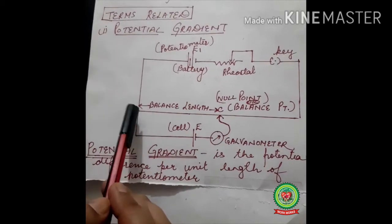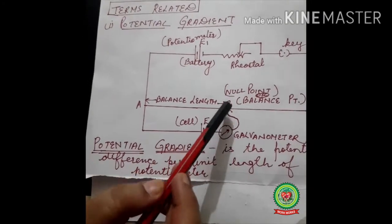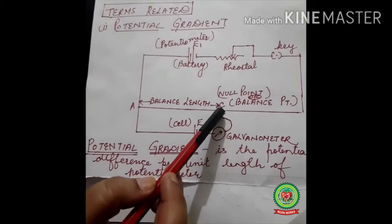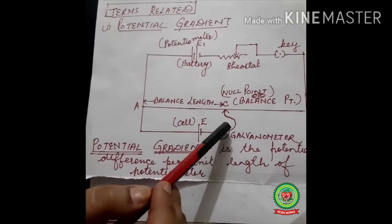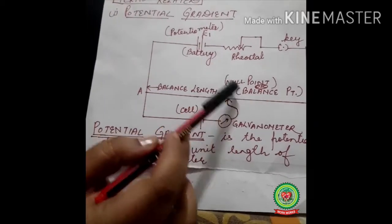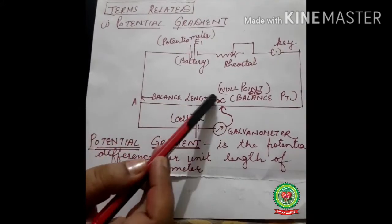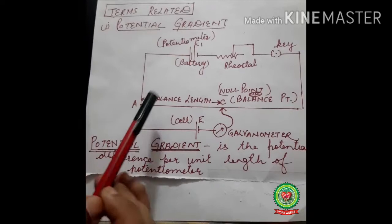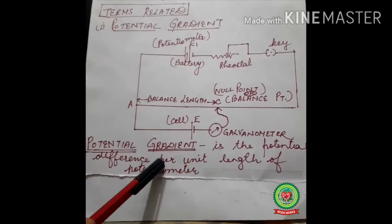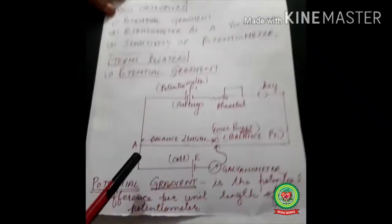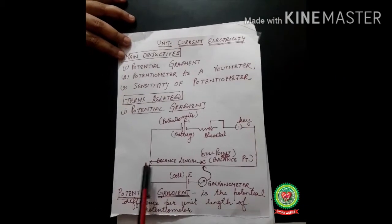We drag the jockey along this wire so that we get a null point. A point will come where, even with the jockey there, no deflection in the galvanometer occurs — meaning no current is passing. This is called the null point or balance point, and the distance from A till this point is called the balanced length. From this we can conclude what potential gradient is: it is the potential difference per unit length of the potentiometer wire.